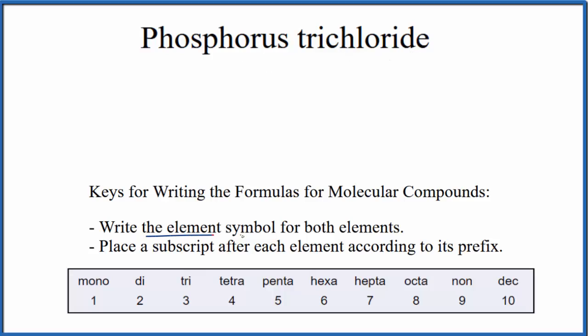So first we'll write the element symbol for each element. Phosphorus, that's P, and then chloride, that's from chlorine, that's Cl.